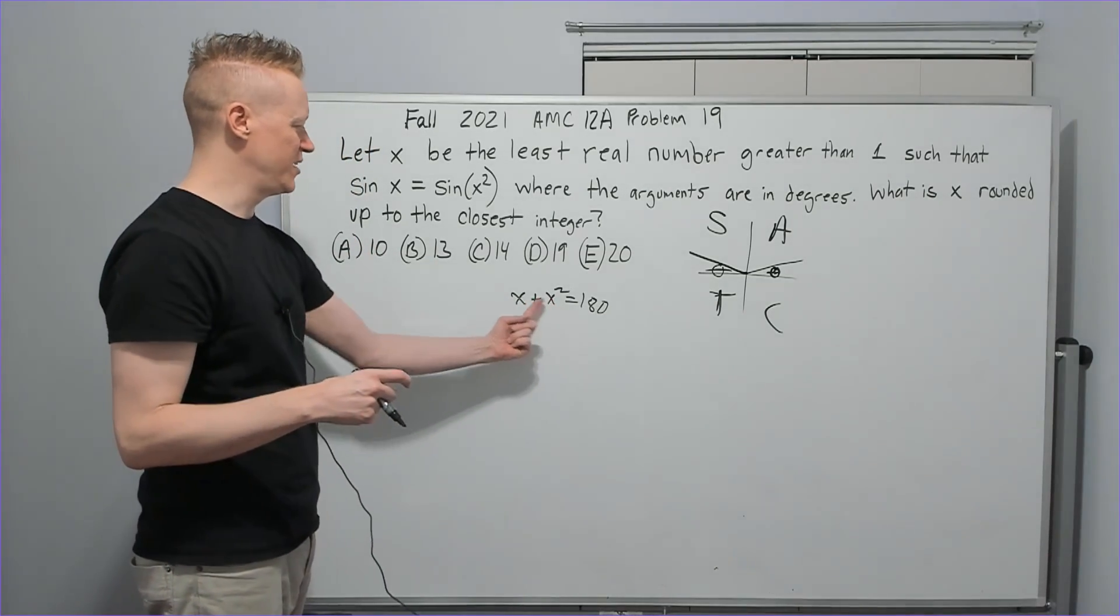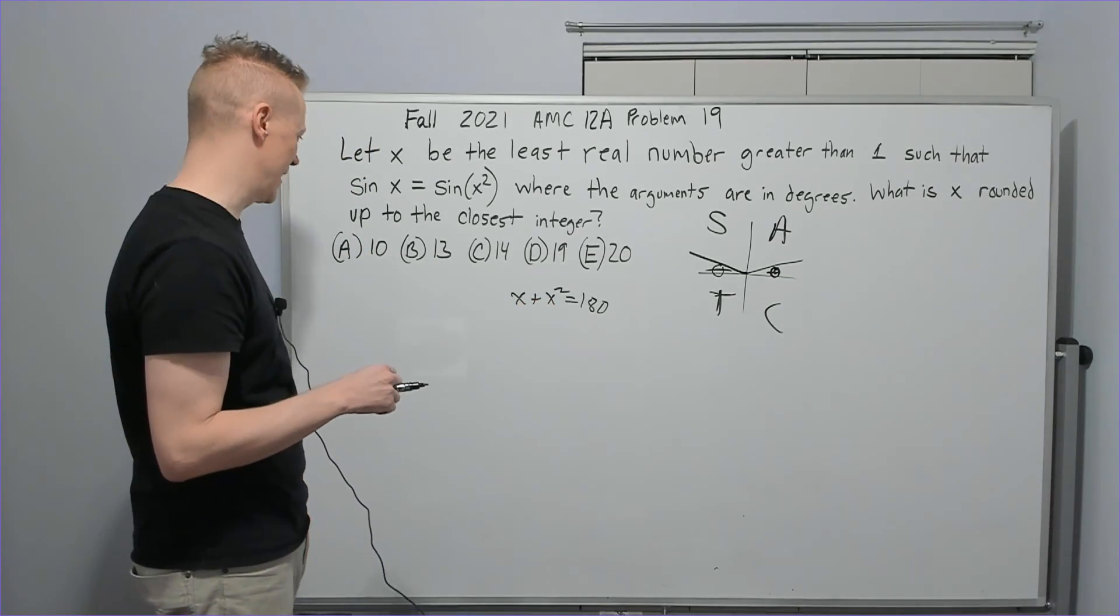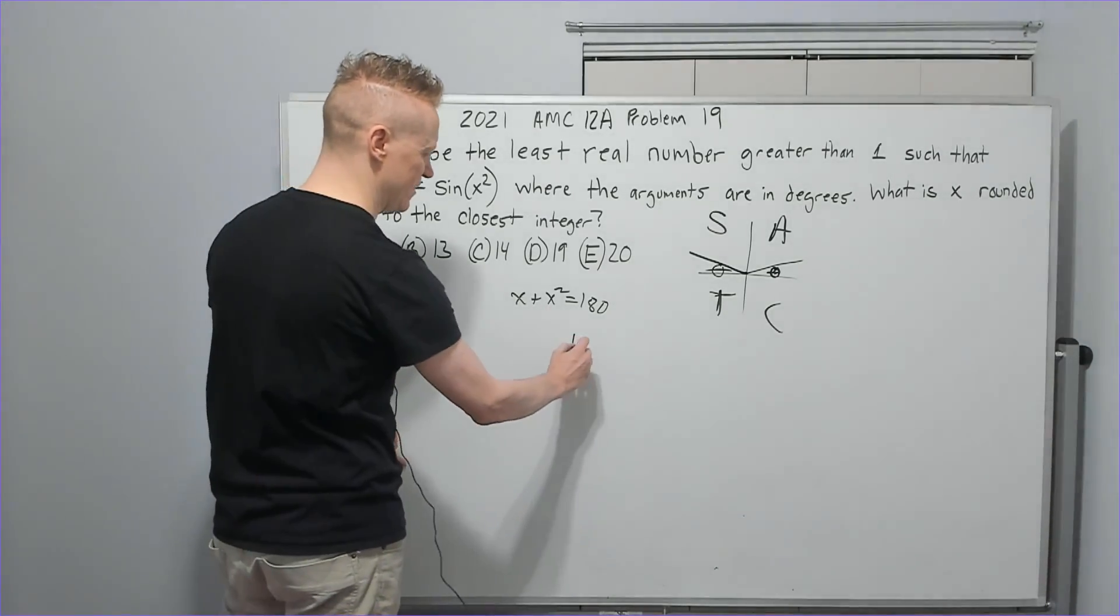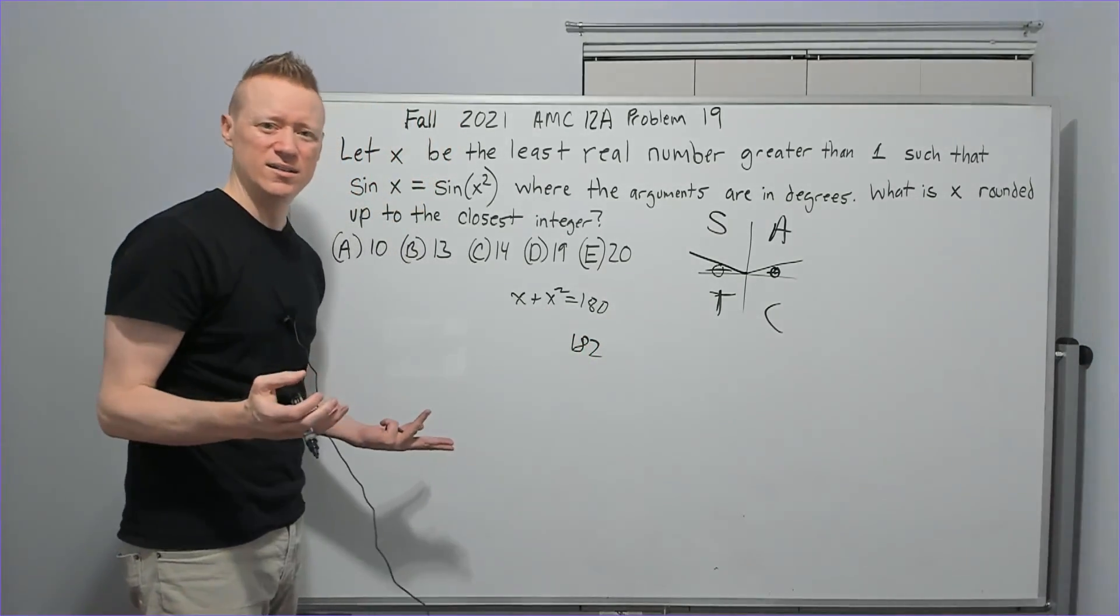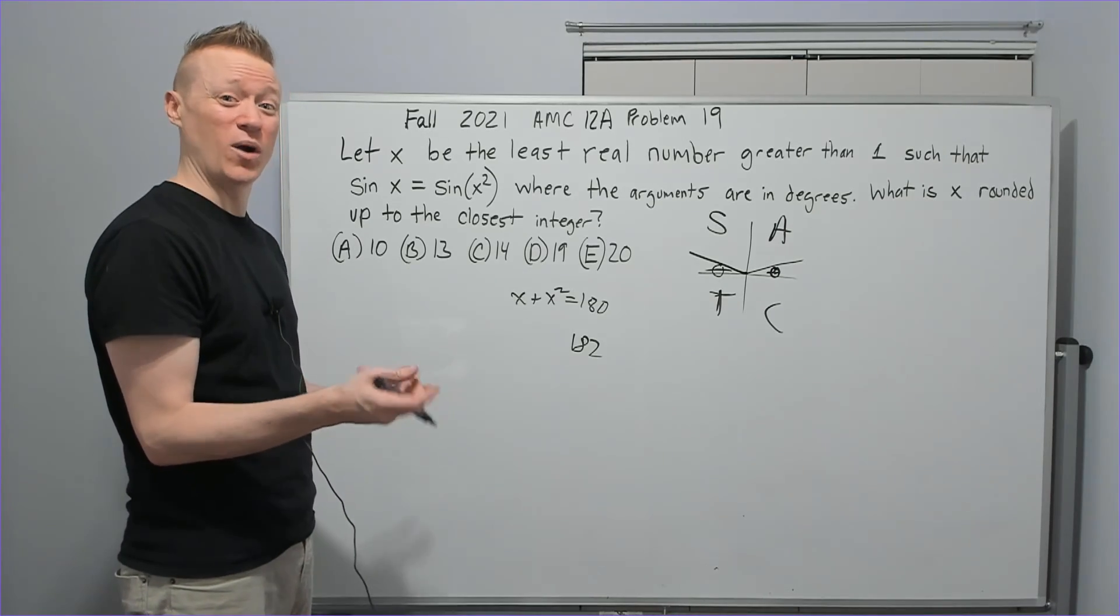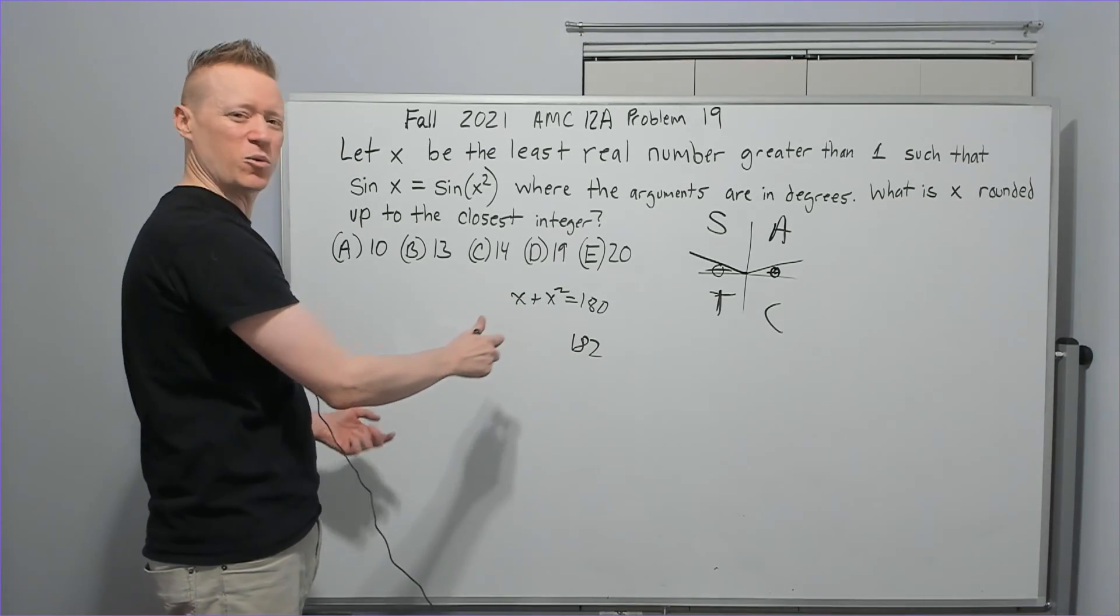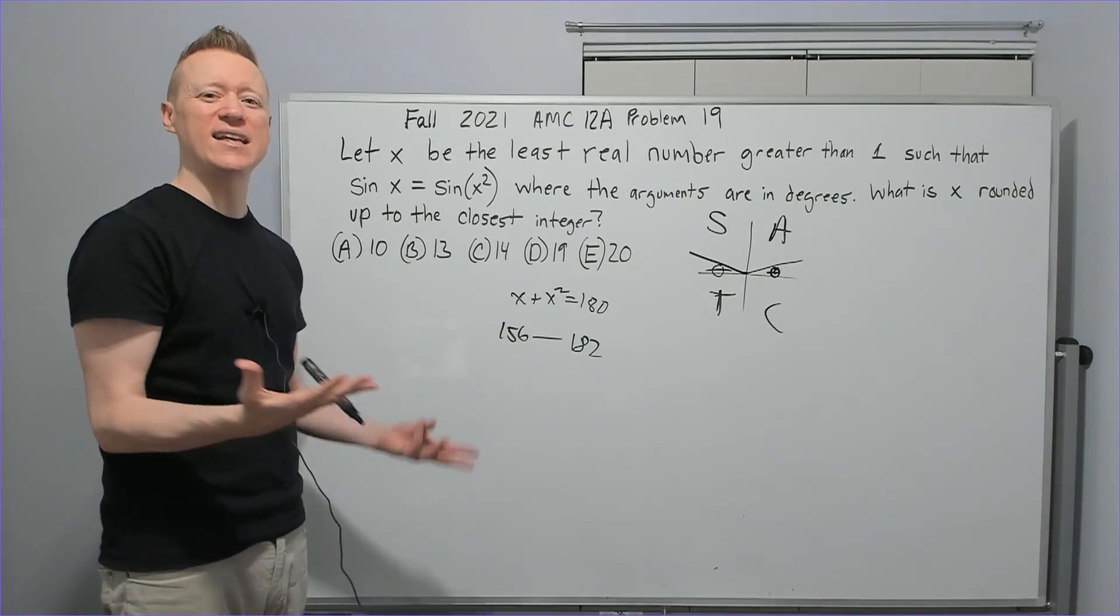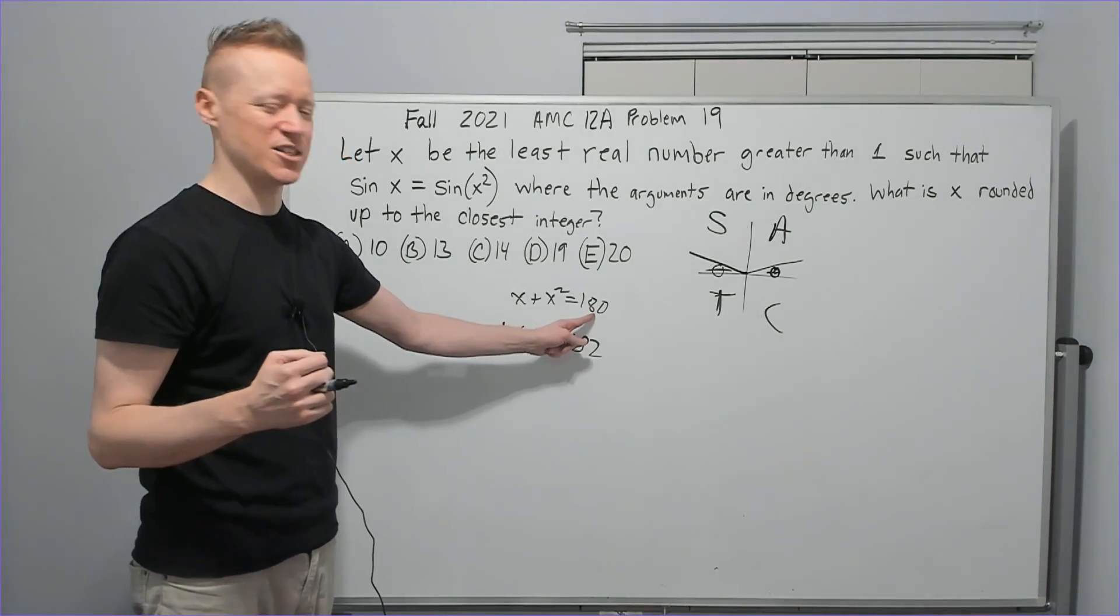110, not close yet. Let's try 13. 13 plus 169, 182. That's a little bit too big, but 12? Where's 12 at? 144 and 12, 156. So somewhere between 12 and 13 on the degree marker, you're going to pass over 180.